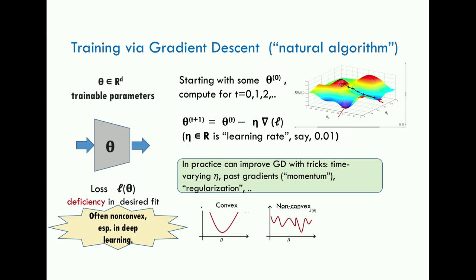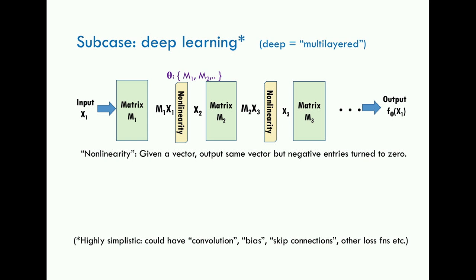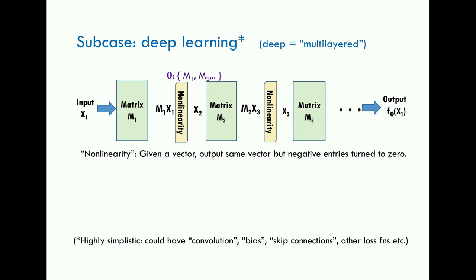Deep learning refers to models that are multi-layered — that's what 'deep' means. The simplest form is a network where each layer applies a linear transformation (a matrix) followed by a simple non-linearity, such as zeroing out negative coordinates. In practice, people use something called the ReLU, a slightly more complicated non-linearity where you set a threshold and zero out all coordinates below it.